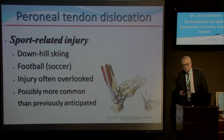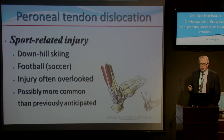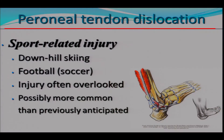Peroneal tendon dislocation is the first topic I'm going to mention, and the peroneal tendon rupture is the second one. This is purely a sports-related injury, especially in downhill skiing. And I understand that you are not doing so much downhill skiing here in Qatar. But what we are really talking about oftentimes today is football. This injury is often overlooked and is probably more common than sometimes anticipated.